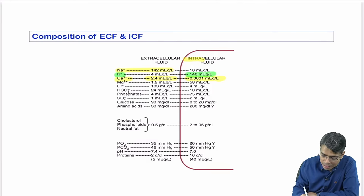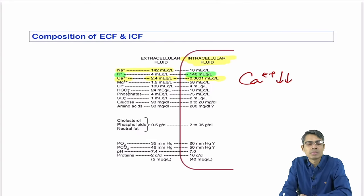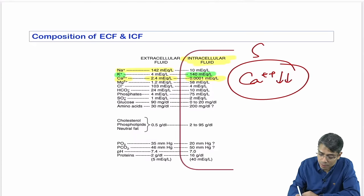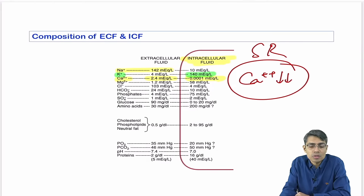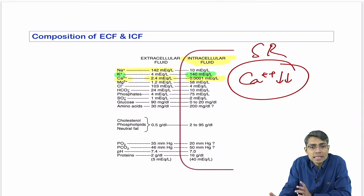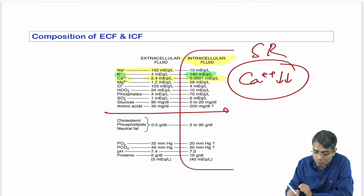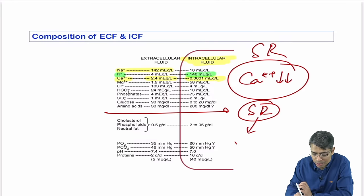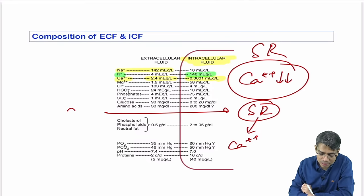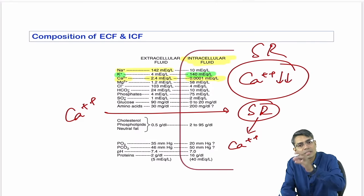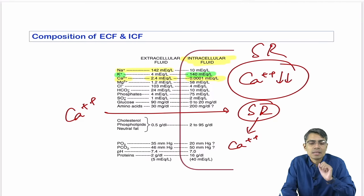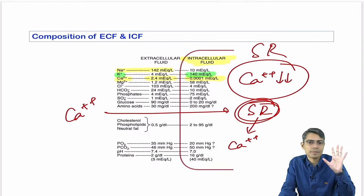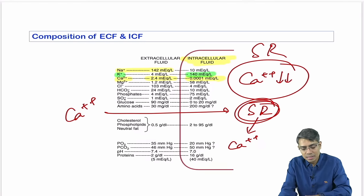Because calcium is so low in the intracellular fluid, calcium must enter from the extracellular fluid or be released from the sarcoplasmic reticulum for muscle contraction. For skeletal muscle, calcium comes from the sarcoplasmic reticulum. For cardiac muscle, calcium must also enter from extracellular fluid.